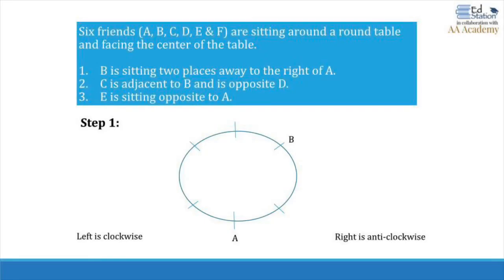I'm going to take A as the starting point. B is sitting two places away to the right of A. Since they are facing the center, right is the anti-clockwise direction, so two places away anti-clockwise from A gives us B's position. I have marked the position of B as given in the table. The next condition with reference to either of them is that C is adjacent to B — adjacent means beside.